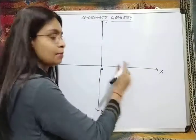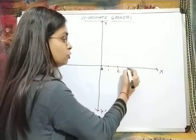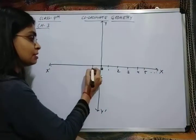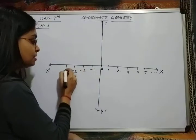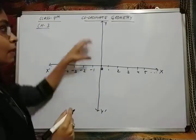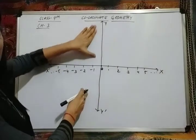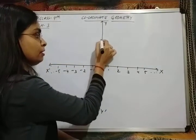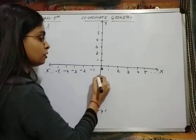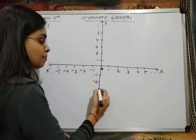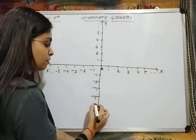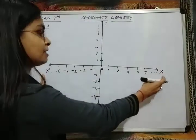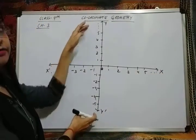On the horizontal axis, positive numbers 1, 2, 3, 4, 5 are to the right and negative numbers minus 1, minus 2, minus 3, minus 4, minus 5 are to the left. On the vertical axis, positive numbers 1, 2, 3, 4, 5 are above and negative numbers minus 1, minus 2, minus 3, minus 4, minus 5 are below. So we have two lines: the horizontal x, x dash and the vertical y, y dash.